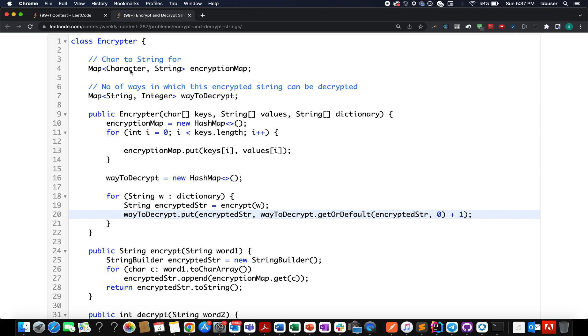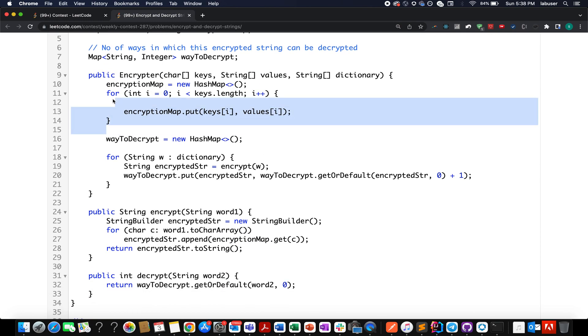Here I have created 2 maps. One is character to string which will be used as my encryption map. The other one will be used to identify the ways to decrypt an encrypted string as per dictionary. I initialize it to new hash map, the encryption map. I walk through the keys and the values array that I have and I put these keys corresponding to these values in my encryption map.